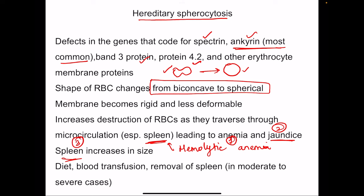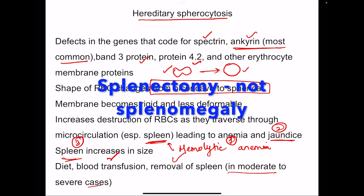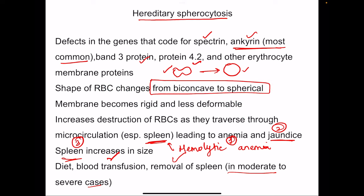For the treatment of hereditary spherocytosis, blood transfusion may be required because of too much hemolysis. Depending on the degree of splenomegaly and hemolysis, splenectomy is also performed in moderate to severe cases to prevent excessive hemolysis.